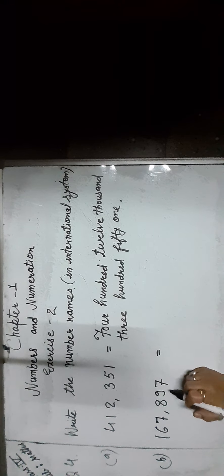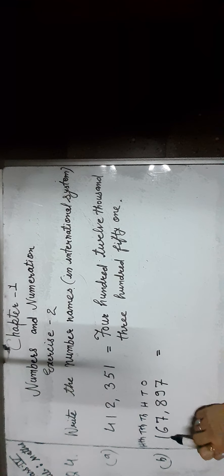Next number is 1,67,897. Let us check the position of each digit according to the international system: 7 ones, 9 tens, 8 hundreds, 7 thousands, 6 ten-thousands, and 1 hundred-thousand. As you can see, 1 is in the hundred-thousands place. So we call it as 167,897.